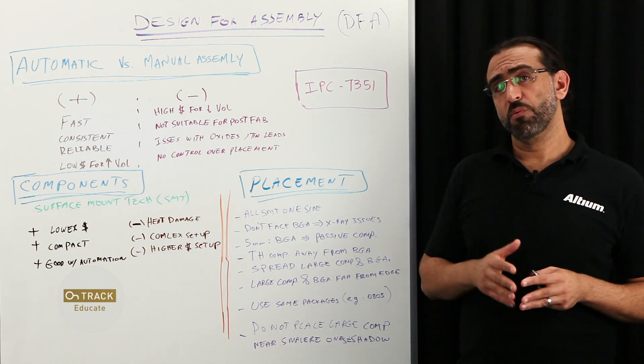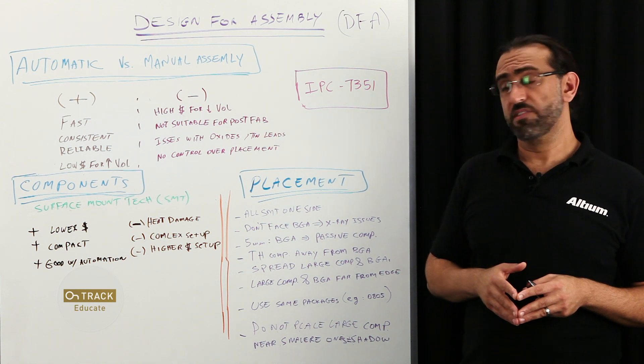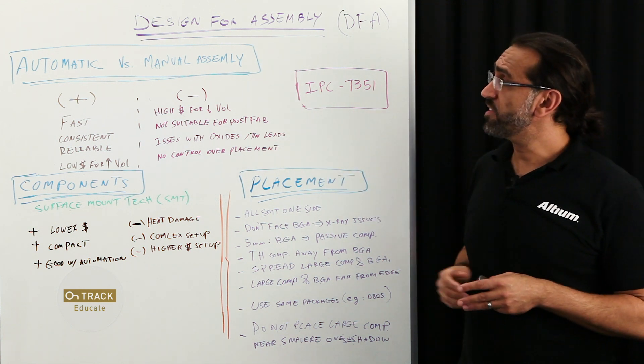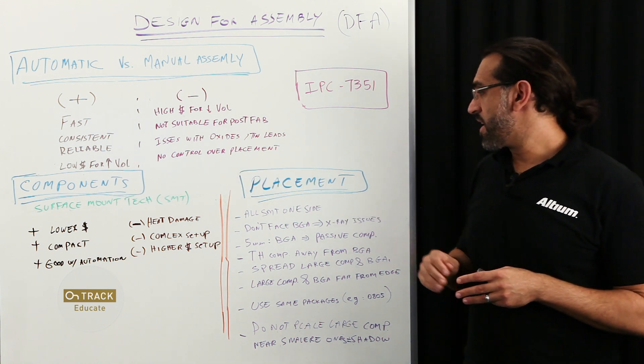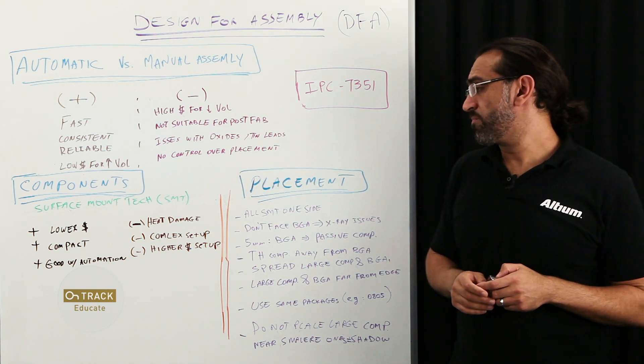So that's a quick overview of what we'll discuss today in this video, as we'll go over these three main highlights: automatic versus manual assembly, the type of components, and placements of those components and best practices.